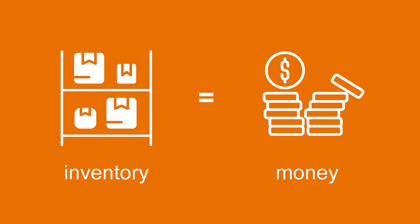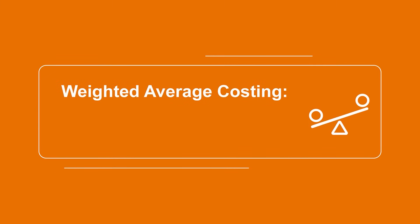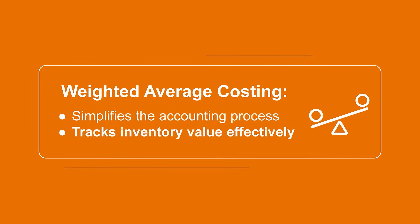Most manufacturing and merchandising companies spend a significant amount of money on inventory. A company's ability to manage inventory has a major impact on their financial performance. When companies sell their inventory, they generate revenue. However, they also need to record the cost of these goods that are sold. The challenge with inventory is that it can be difficult to keep track of the original cost of each unit that's sold, as a result of things like fluctuating prices. This is where the weighted average costing method can be extremely useful, as it helps companies simplify the accounting process and track inventory value more effectively with less record keeping.